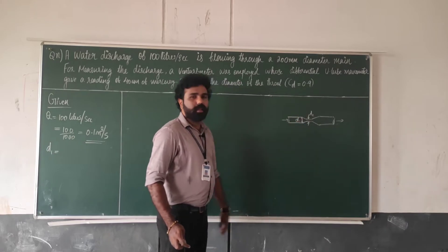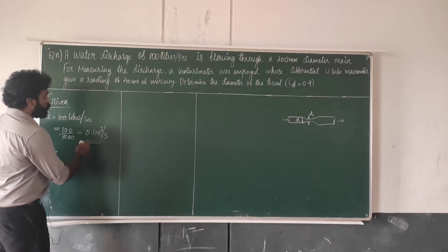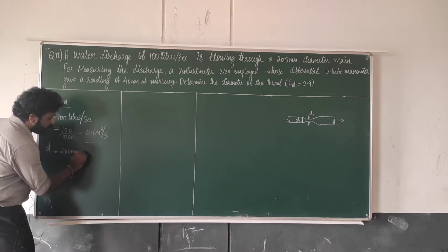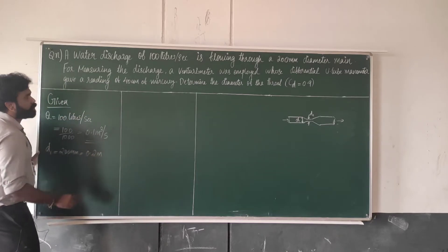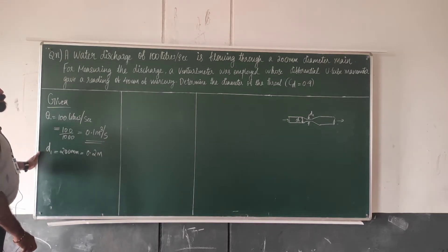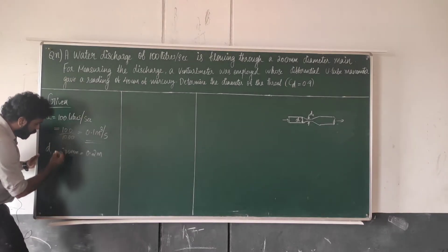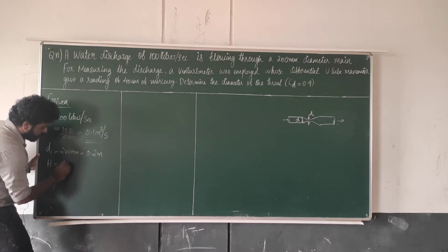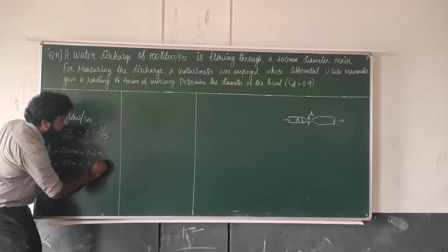The diameter D1 is the inlet diameter of the Venturimeter, equal to 200 mm, that is 0.2 meters. The differential manometer reading is equal to 40 centimeters, which is 0.4 meters.